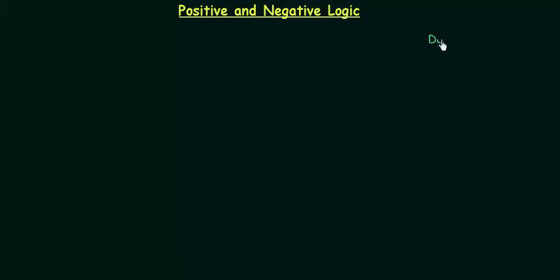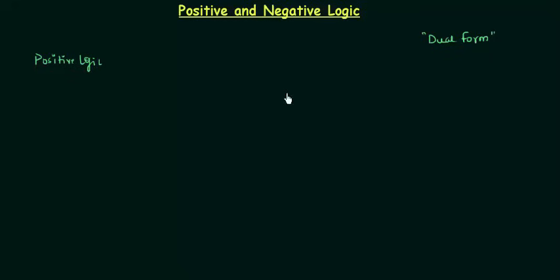If you want to study dual form, which is a very important topic in digital electronics, then you must know positive and negative logic. In this presentation we are going to cover positive and negative logic so that we may start dual form from the next presentation. On the left hand side I will explain positive logic and on the right hand side I will explain negative logic. We will compare them and finally solve a few examples.